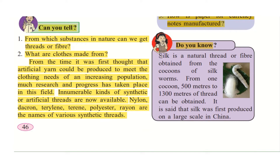Here is a little information about how silk is made. Silk is a natural thread or fiber obtained from the cocoons of silkworms. When butterflies lay eggs, the eggs — called larvae — then become the silkworms. The silkworms eat a lot of food and then cover themselves, making a shell.